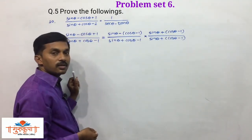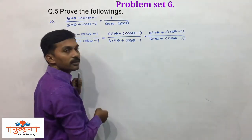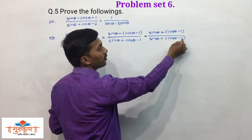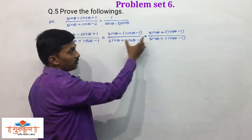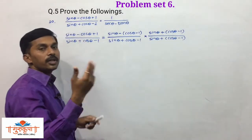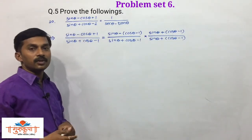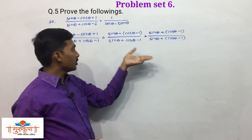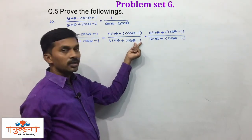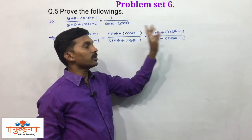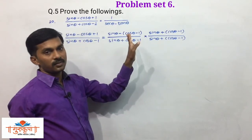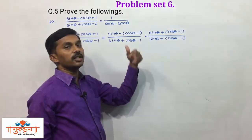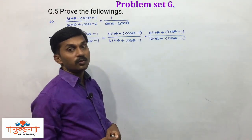In the denominator, (sinθ + cosθ - 1) multiplied by (sinθ + cosθ - 1) is the same term — like 7 × 7 = 7². So we take the square of that denominator and use the square expansion of the sum of three terms.